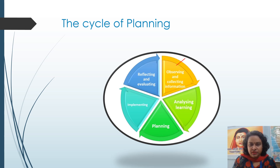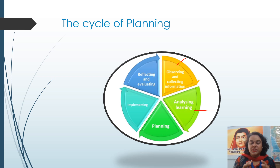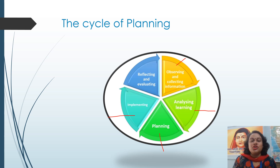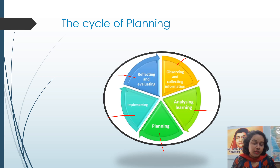First of all, observing and collecting information. Then analyzing learning — what we are learning, we will try to analyze and then plan. Next is implementation, where we will try to reflect and evaluate. These are the 5 steps that we follow in planning.